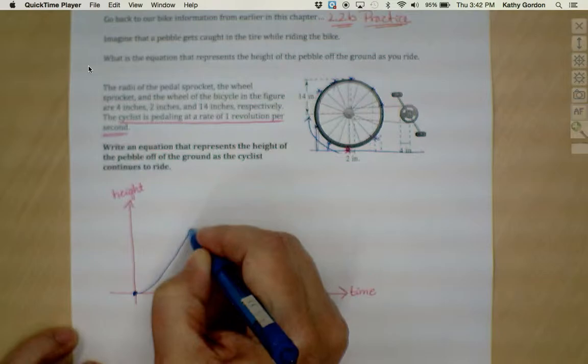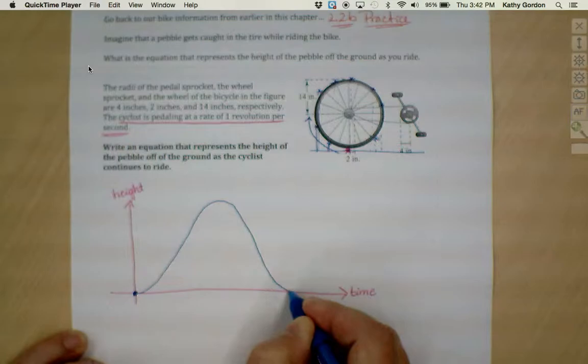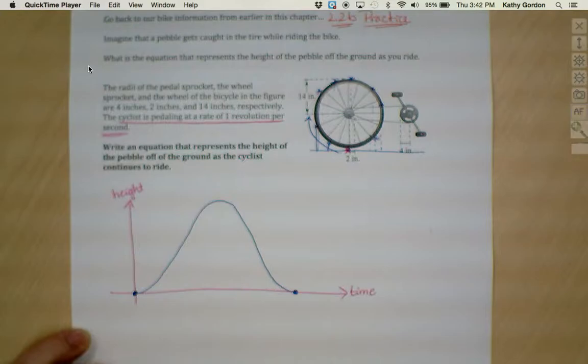On a two-dimensional time versus height kind of graph, my graph is going to look like this. My pebble is getting higher, higher, higher, higher, higher up to a certain point, and then it comes down lower, lower, lower until it reaches back down to the ground again.